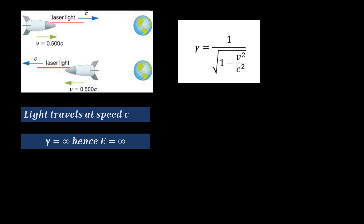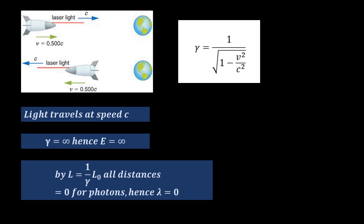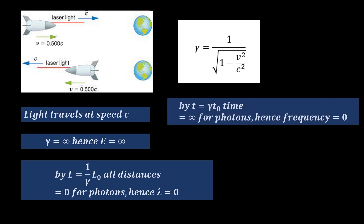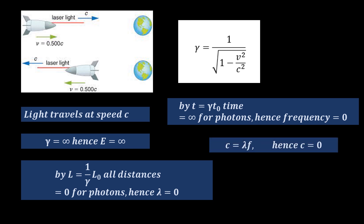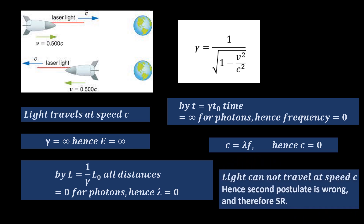A photon travels at the speed of light, meaning the gamma factor for the photon is infinity. This also means the photon's energy is infinite. By the Lorentz length contraction formula, all distances travelled by a photon shrink to zero, meaning a photon does not experience space. Therefore the wavelength is zero, or the word wavelength becomes meaningless. Furthermore, according to the Lorentz time dilation formula, time in the frame of reference of the photon is infinite with respect to a stationary observer, hence frequency is zero. Since speed equals wavelength times frequency, the speed of light equals zero — yet another contradiction. Therefore it is an intrinsic requirement of special relativity that light should not travel at the speed of light, which means Einstein's second postulate — the pillar of special relativity — is wrong, and hence special relativity is wrong.